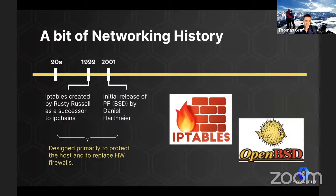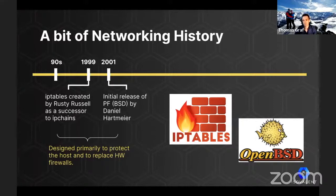Around the same time, in 1999, IPTables was created by Rusty Russell as a successor for IPChains. And shortly after, PF was released by Daniel Hartmeyer for BSD. Both projects focused on software-based firewalling and were primarily designed to protect the host or replace hardware-based firewalls.